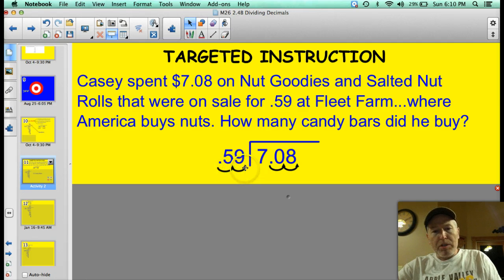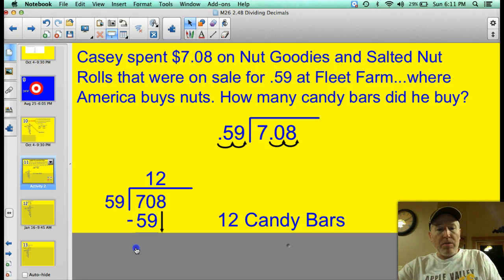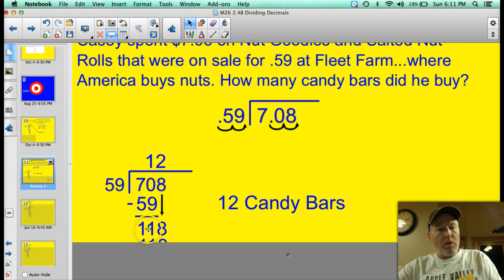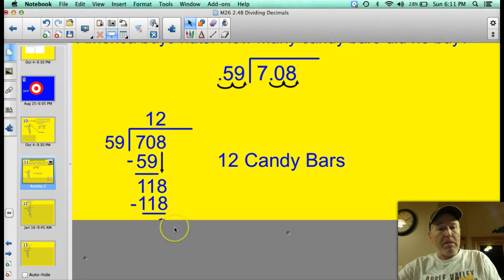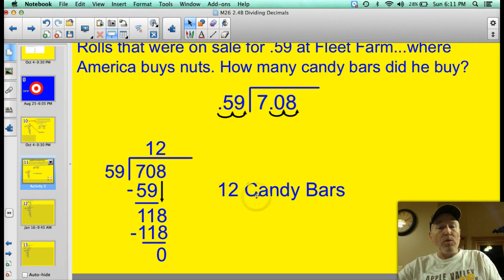So once again, I moved the decimal two spots to the right here to give myself a divisor of 59. And of course, I have to move it two spots in the dividend as well. So my new problem looks like this. 59 divided by 708. Well, I can take you through those steps too. 59 times 1 is 59. So when I subtract 70 minus 59, I have 11 left over. Does 59 go into 11? No, it doesn't. So I bring down that 8. That gives me 118. And 59 goes into 118 two times. I have zero left over. My quotient is 12. The answer to the word problem is how many candy bars did he buy? He bought 12 candy bars at 59 cents apiece.